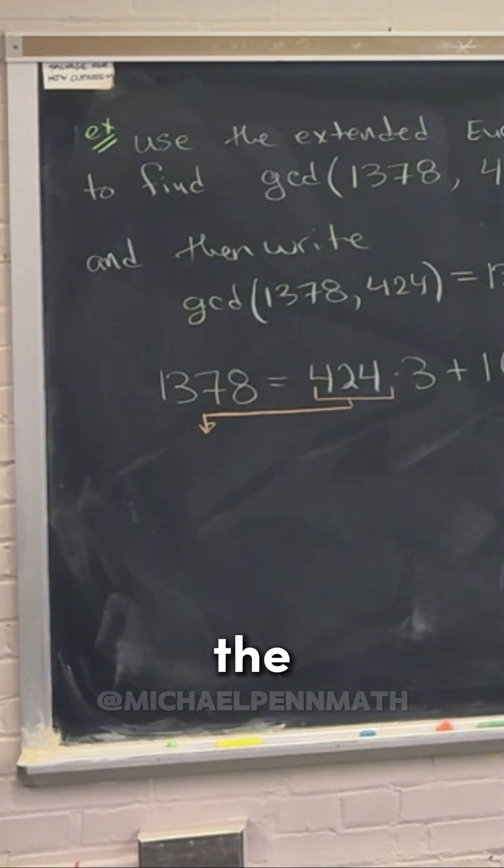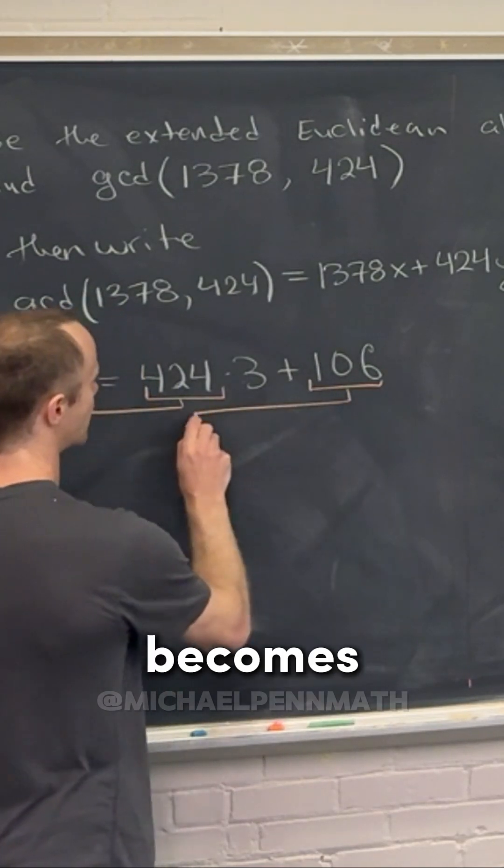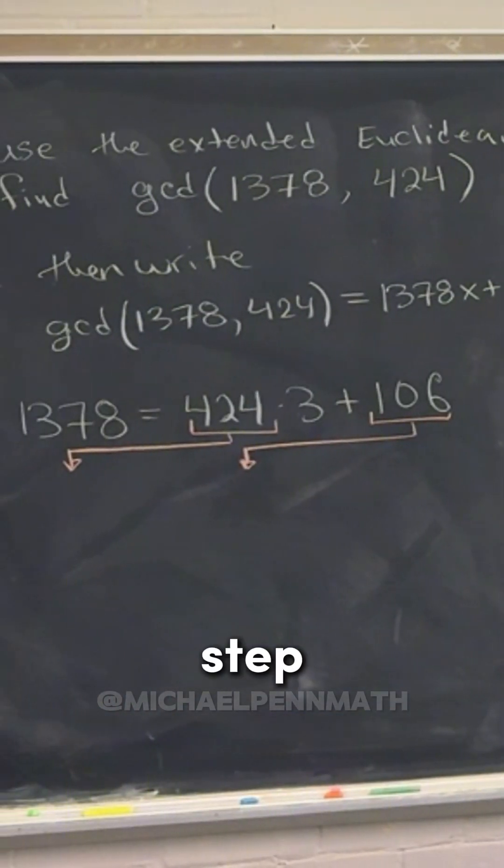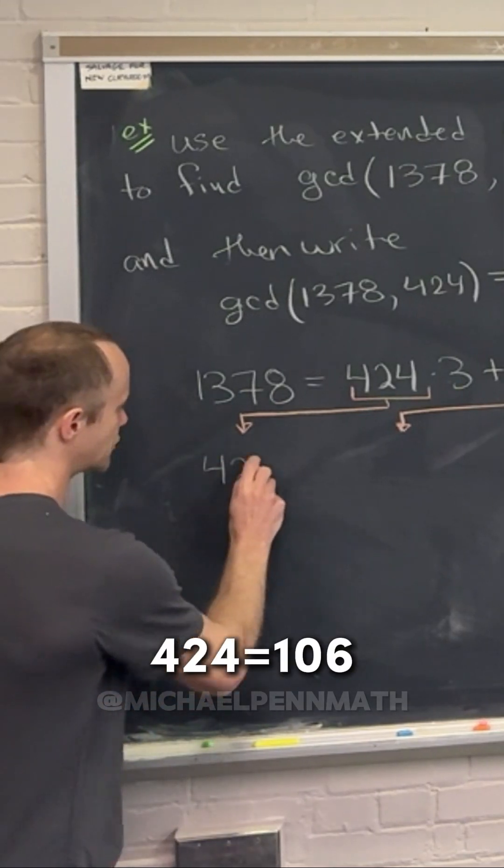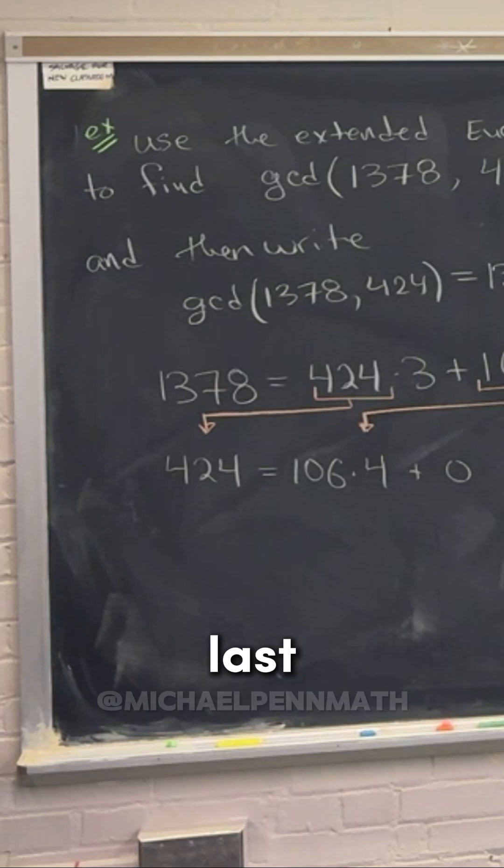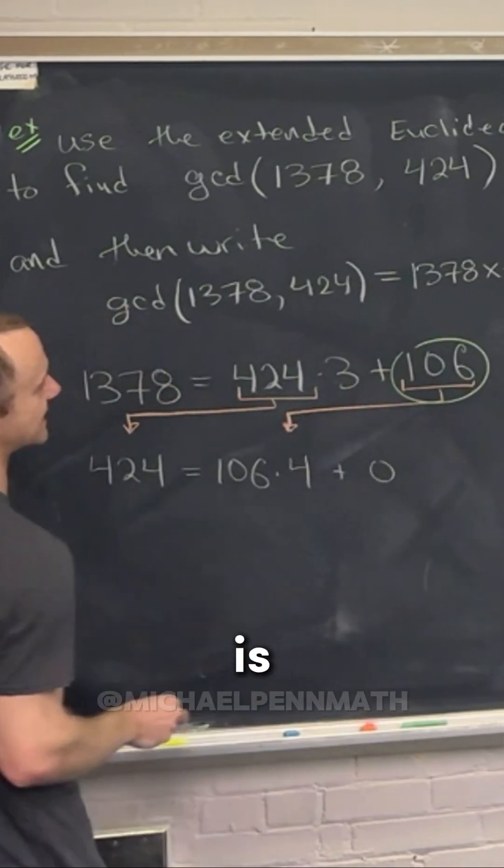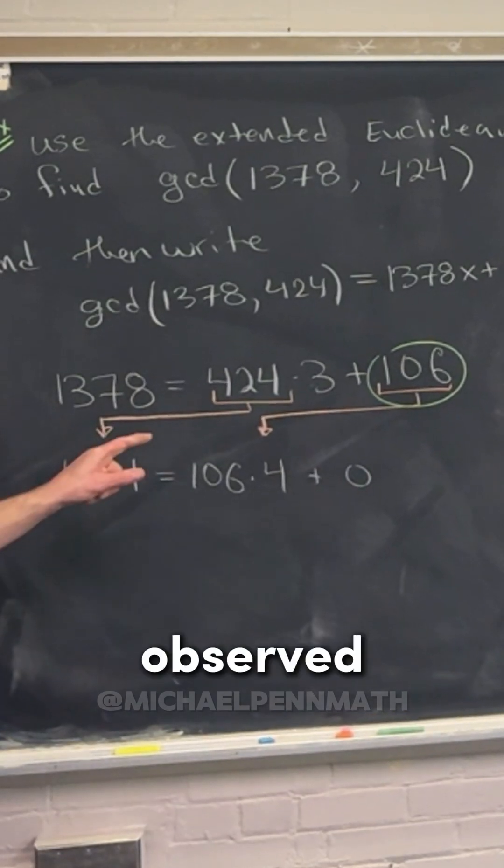Then the remainder from the first step becomes the divisor in the second step. So that means we're going to do 424 equals about 4 times 106 plus 0. The last non-zero remainder, which in this case is 106, is the GCD, and observe that we already have it written in terms of our original two numbers.